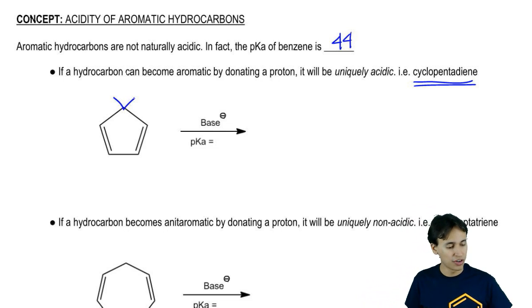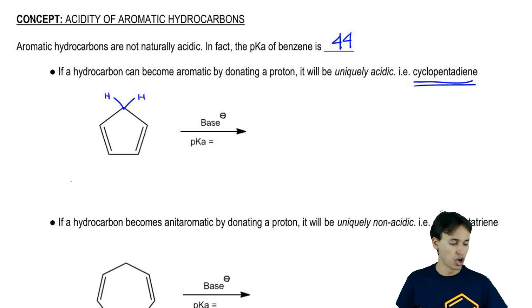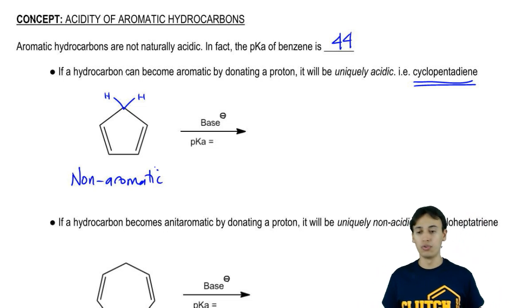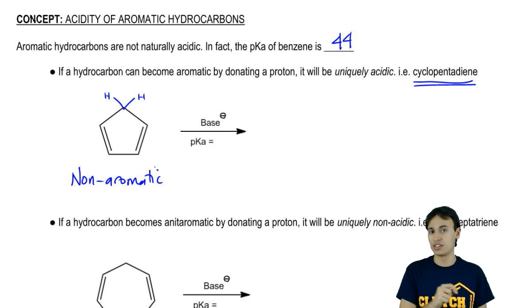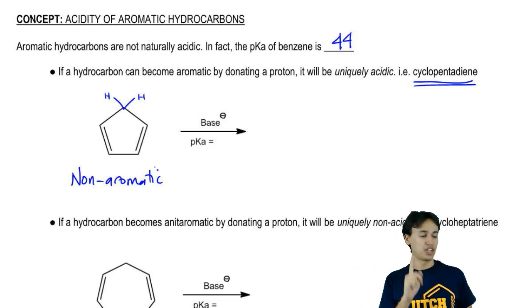But it's got these two hydrogens up here. Now, what's special about these hydrogens? Well, this is right now not a fully conjugated molecule. This is what we would consider non-aromatic because it fails one of Huckel's rule criterias. It fails one of the four tests because it's not fully conjugated.